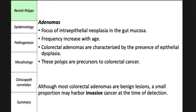The most common neoplastic polyps are colonic adenomas, which are precursors to the majority of colorectal adenocarcinomas. Adenomas are intraepithelial neoplasms that range from small often pedunculated polyps to large sessile lesions. They are usually polypoid, representing a focus of intraepithelial neoplasia in the gut mucosa. Frequency increases with age, and patients at increased risk, including those with a family history of colorectal adenocarcinoma, are typically screened colonoscopically at least 10 years before the youngest age at which a relative was diagnosed with CRC.